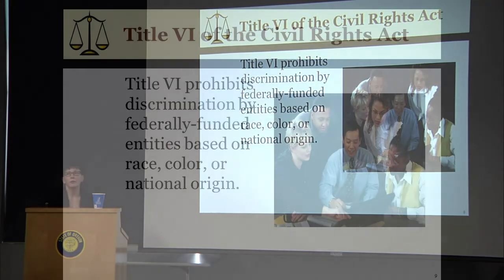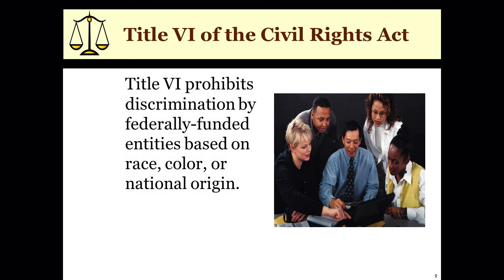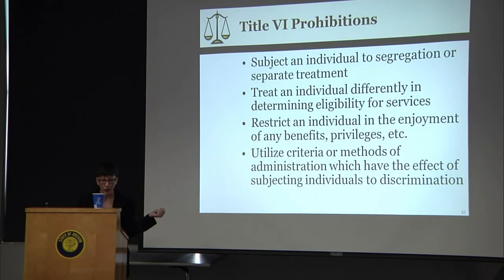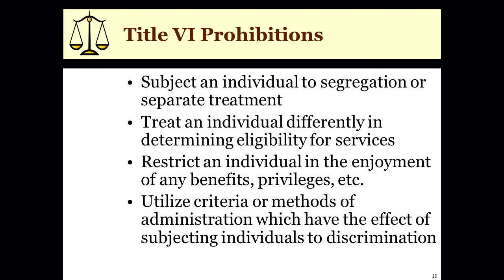Now I'll talk about the actual regulations. The first, and the grandfather of civil rights regulations, is Title VI of the Civil Rights Act, which prohibits discrimination on the basis of race, color, and national origin. Covered entities may not subject an individual to segregation or separate treatment, treat an individual differently in determining eligibility for services, restrict an individual's enjoyment of benefits or privileges, or utilize criteria or methods of administration that have the effect of subjecting individuals to discrimination.